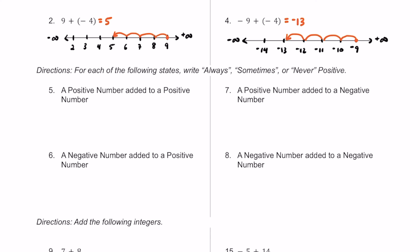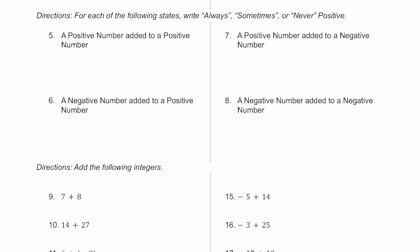For problems 5 through 8, we're writing either always, sometimes, or never in terms of whether these statements equal a positive number. For number 5, a positive number added to a positive number will always be positive — no matter what, because a positive plus a positive will always stay above zero.